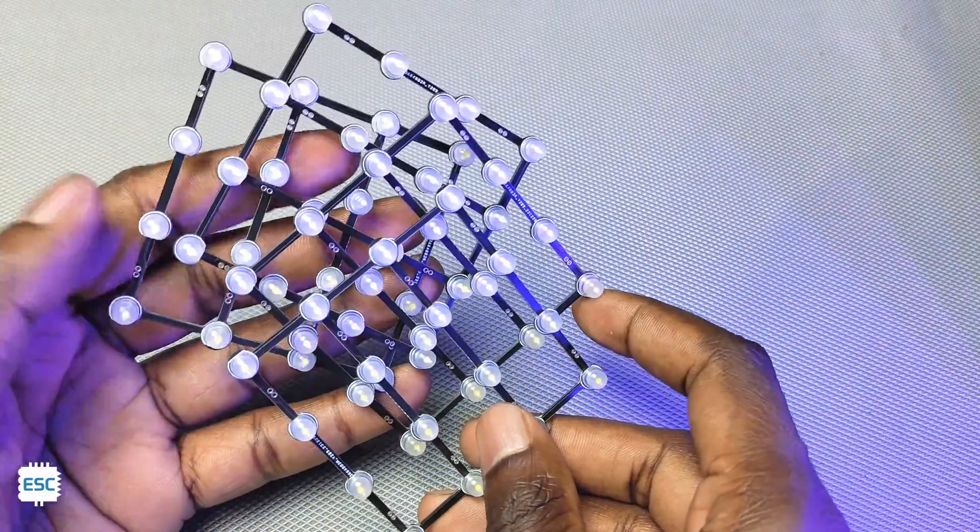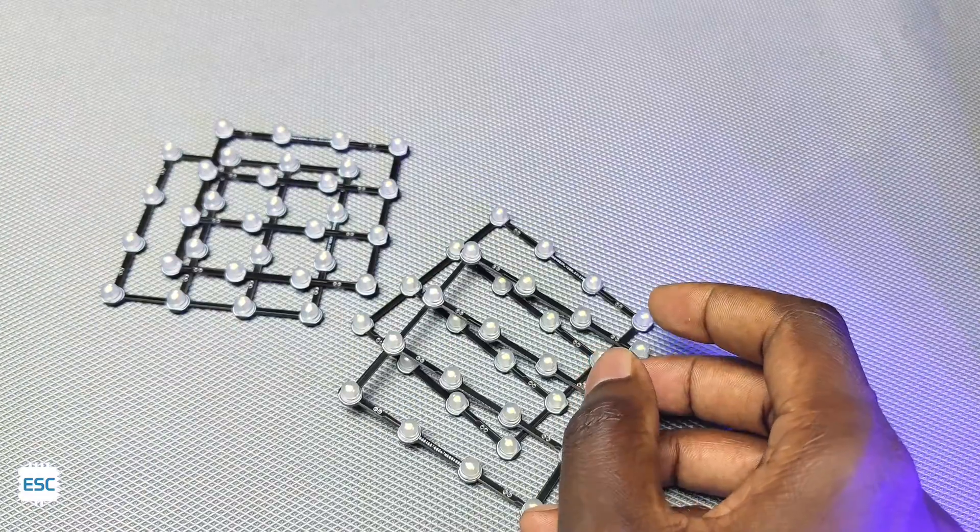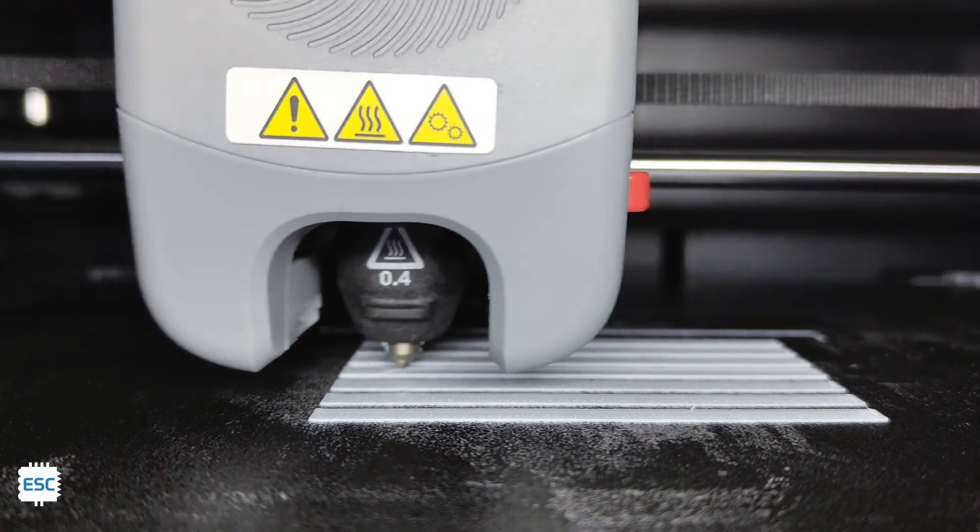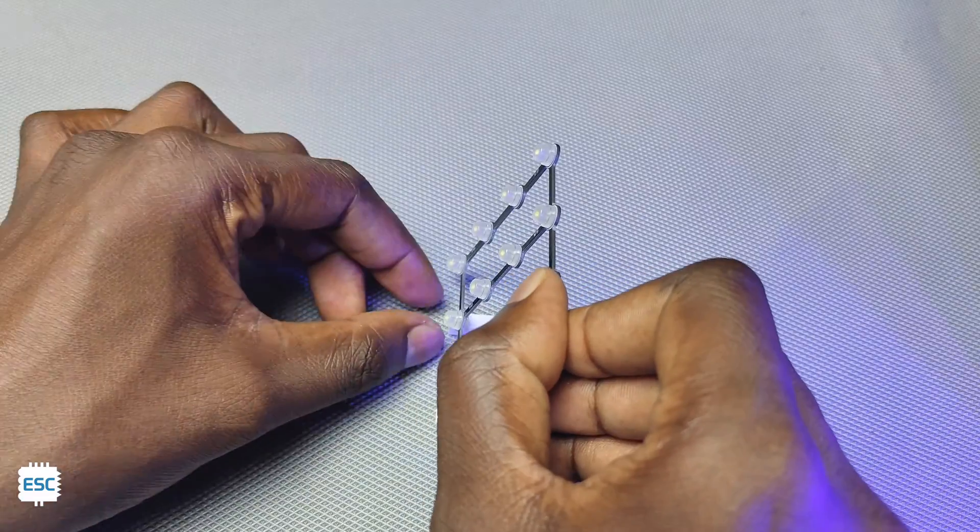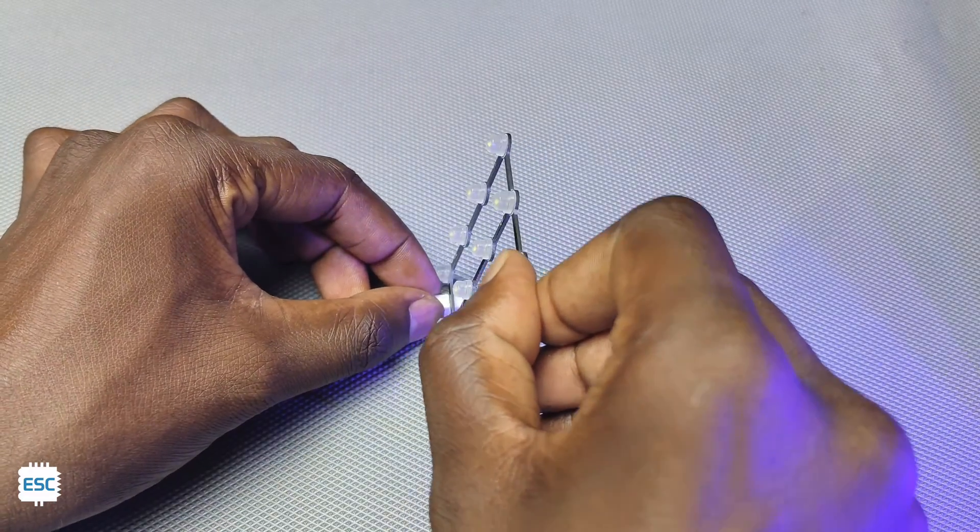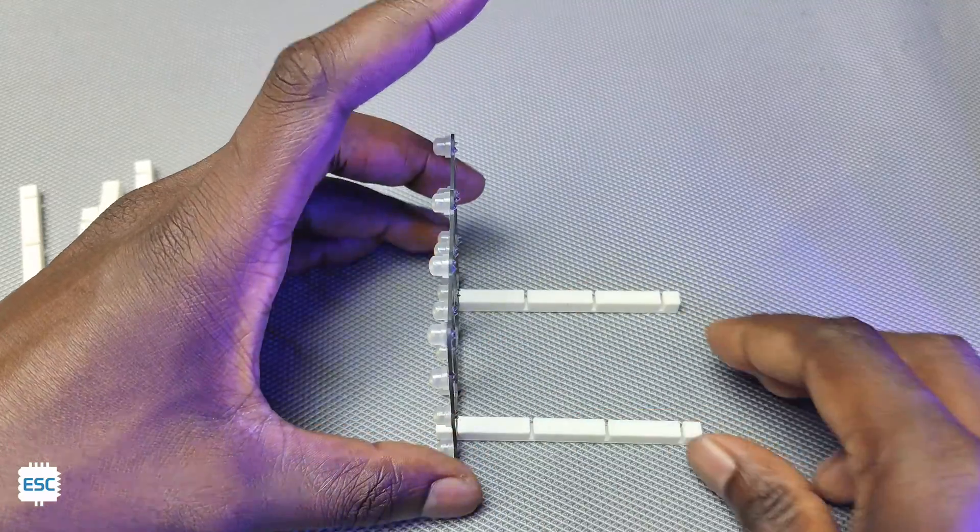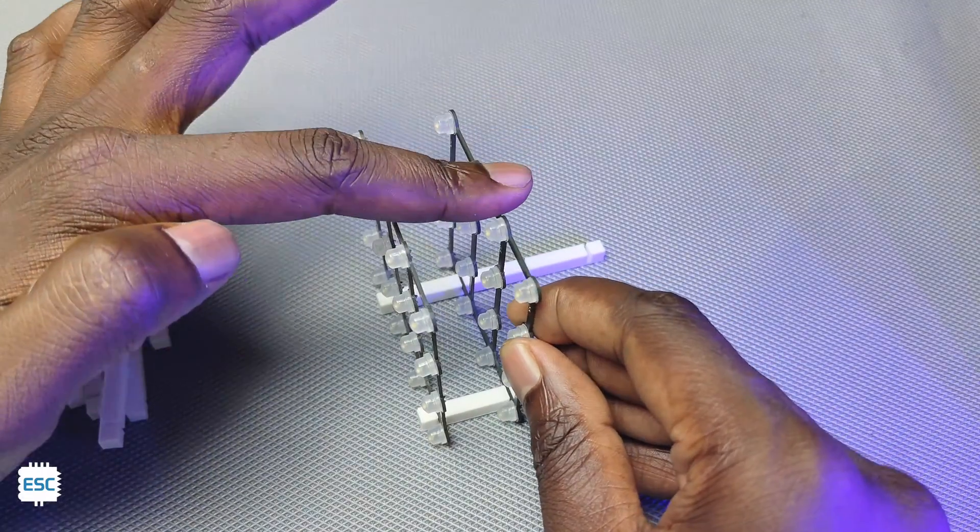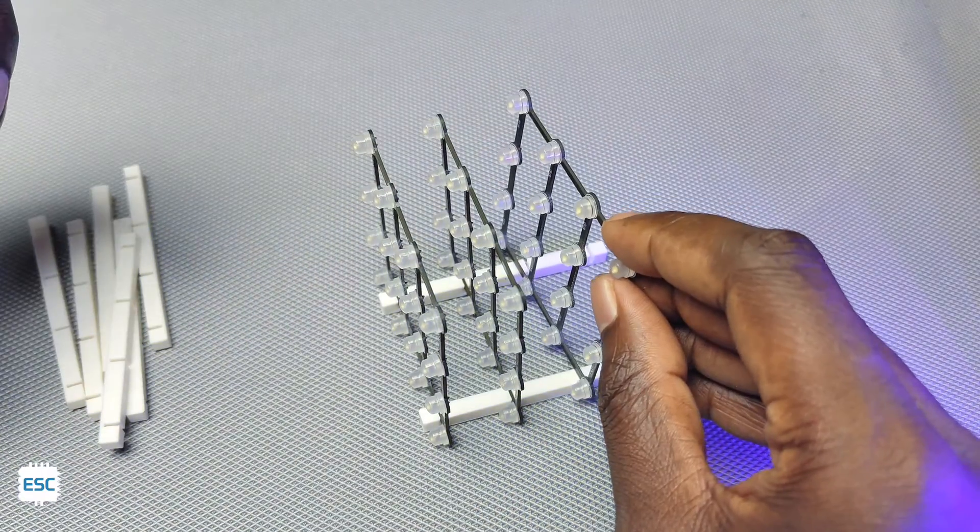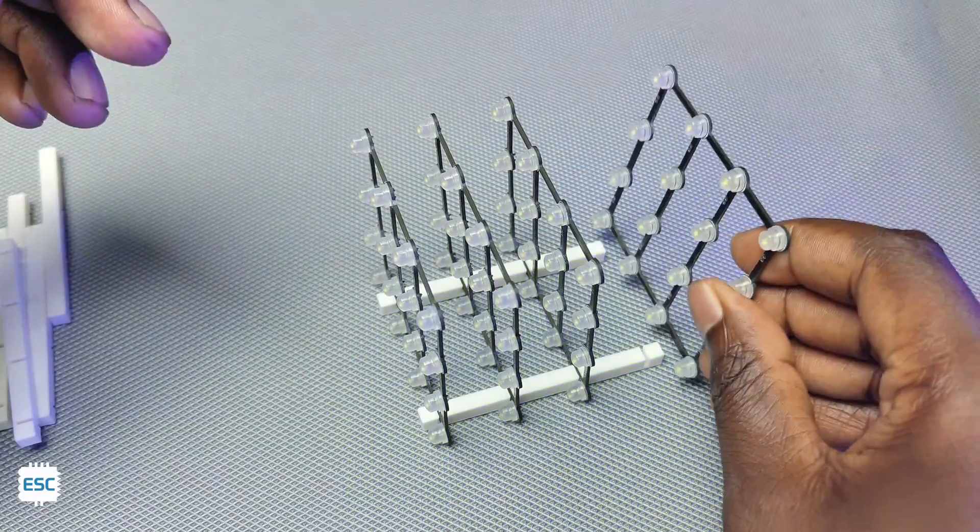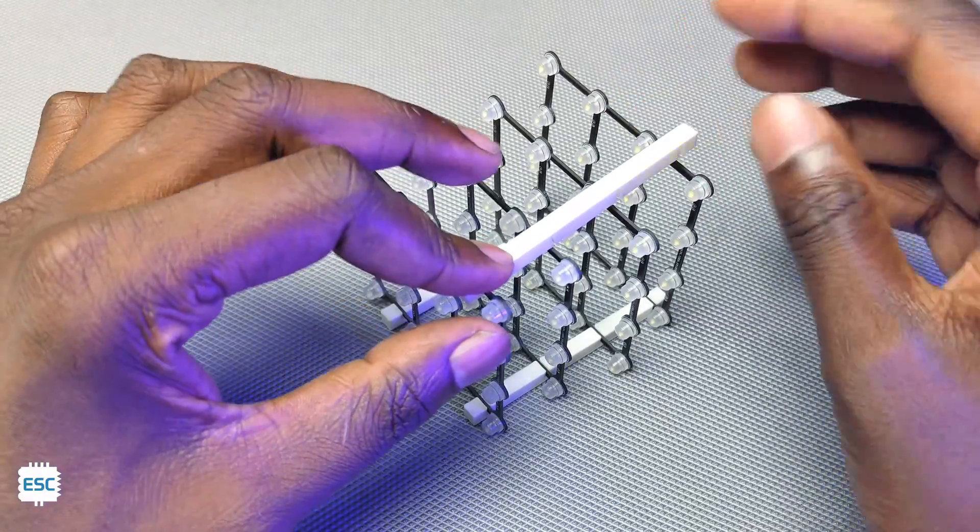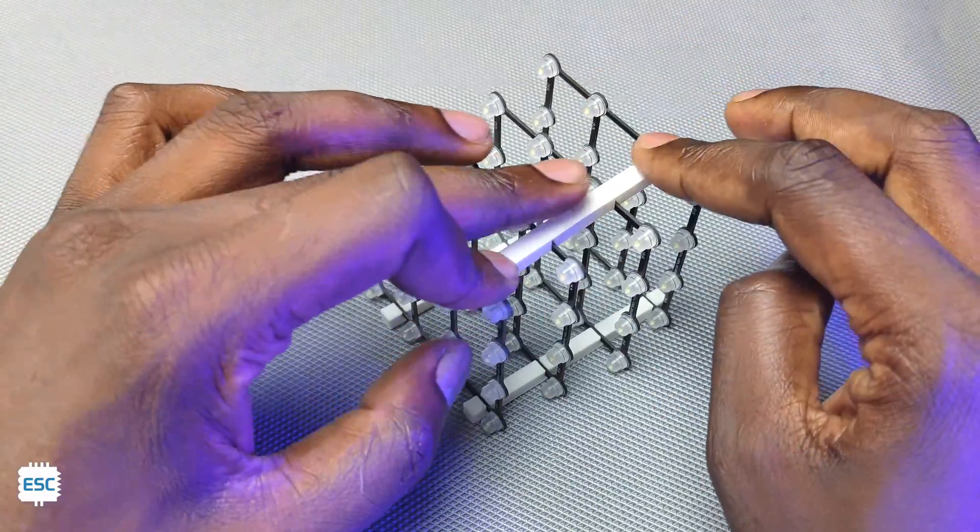In the same way, within 10 minutes I made 4 layers and here they are. Now we need to stack 4 layers. For that I designed and 3D printed some jigs using my FlashForge Adventurer 5M Pro.